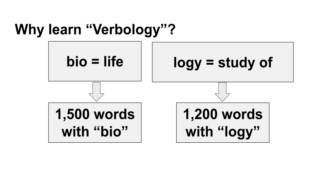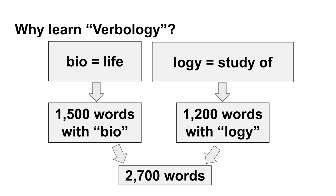There are over 1,200 words in the English language with the sub-part 'logi,' so you have increased your basis for understanding over 1,200 words just by understanding what 'logi' means. So if we do some math, that means you have increased your vocabulary acquisition and comprehension to over 2,700 words simply because you understand two sub-parts: 'bio' and 'logi.' It's kind of like math, only with words.